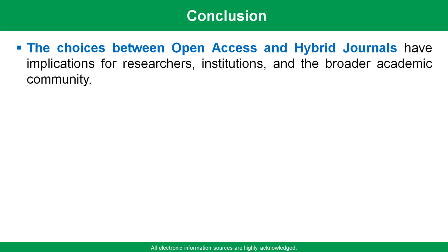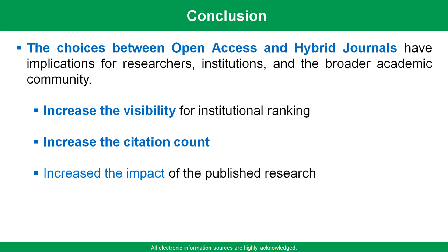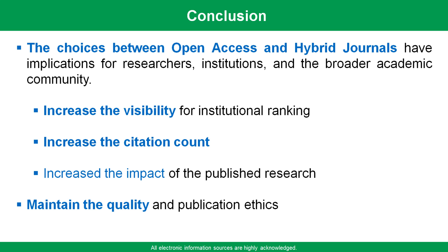The choice between open access and hybrid journals has implications for researchers, institutions, and the broader academic community, such as increased visibility for institutional ranking, increased citation count, increased impact of published research, and maintaining quality and publication ethics.